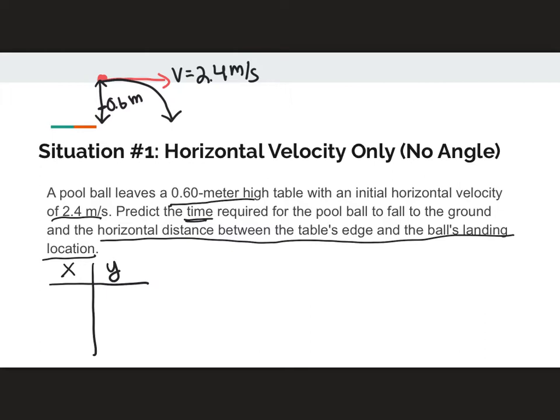In my X direction, I'm given my initial velocity and then not really given anything else, but it's good to write down that my acceleration is 0. What else do I know? Well, nothing else, but I am looking for my delta X and my time.